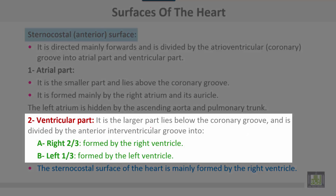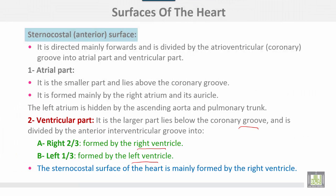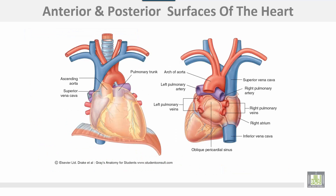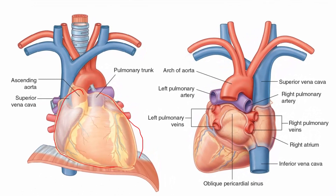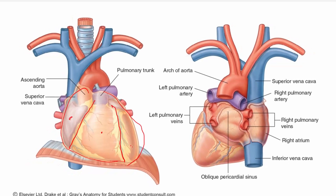The ventricular part is the larger part, lying below the coronary groove. It is divided by the anterior interventricular groove into a right two-thirds formed by the right ventricle and a left one-third formed by the left ventricle. The sternocostal surface of the heart is mainly formed by the right ventricle. The apex is completely formed by the left ventricle.